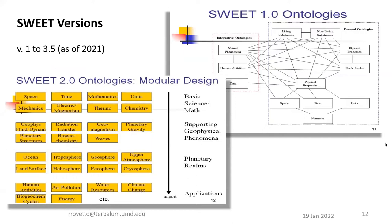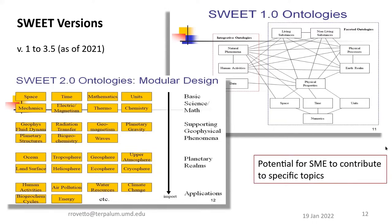Stepping back to previous versions of SWEET: with SWEET version 1.0, we see the faceted structure — a representation of the faceted nature of the SWEET set of ontology modules — covering various topic areas ranging from highly generic concepts, where SWEET acts as a very abstract ontology model, to more specific Earth science domain content. This is an area where subject matter experts from the audience might be interested in contributing, in topics such as geology, oceanography, or meteorology.